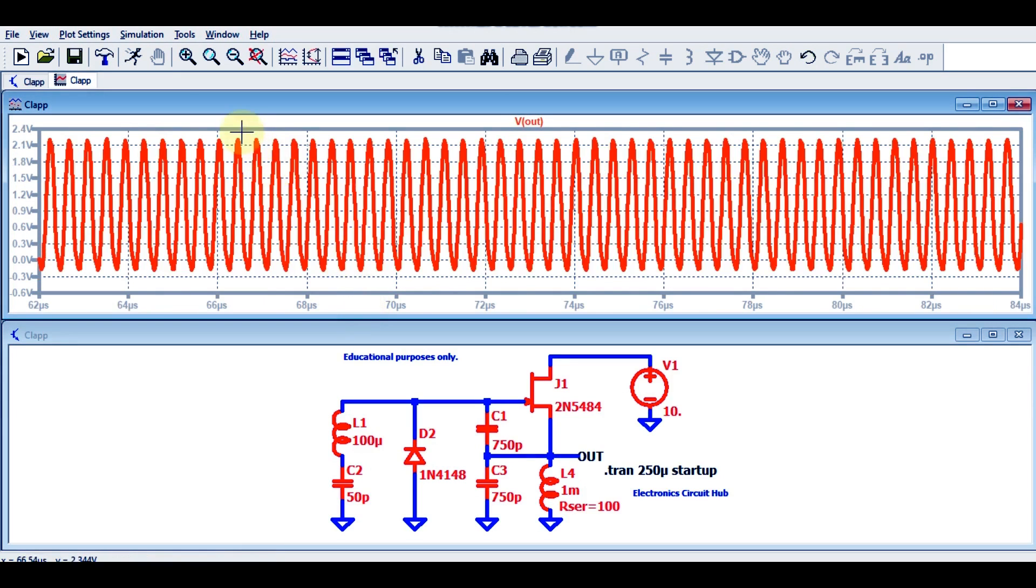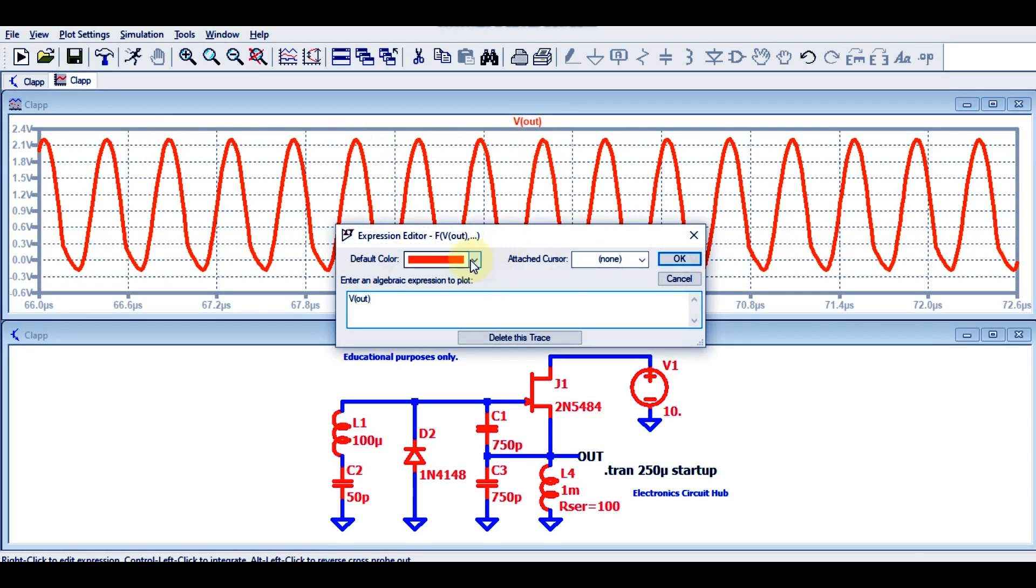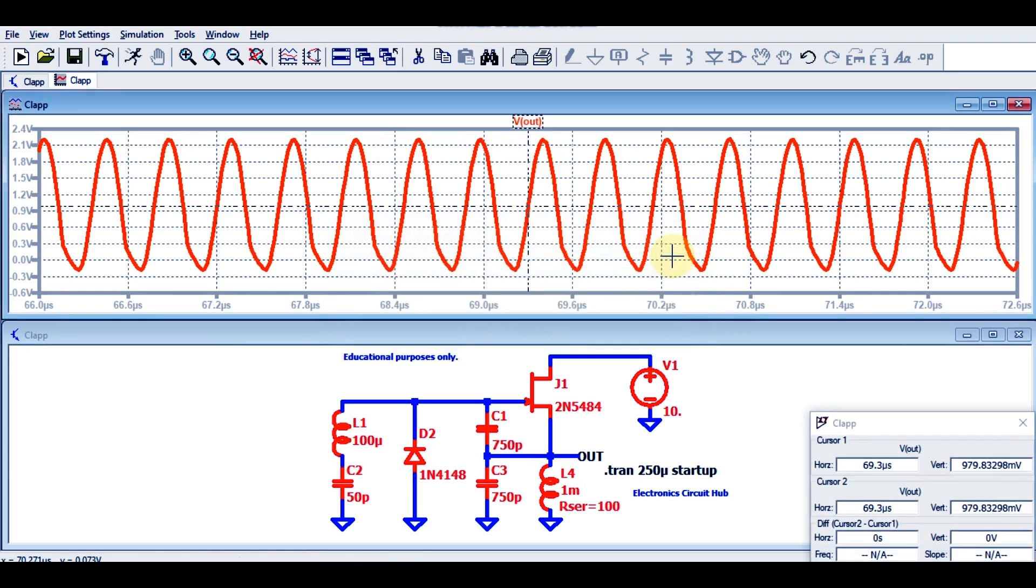Now you can see this is clearly your stable output, and the amplitude for this oscillator is something around 2.2 volts. You can measure the frequency for this Clapp oscillator.